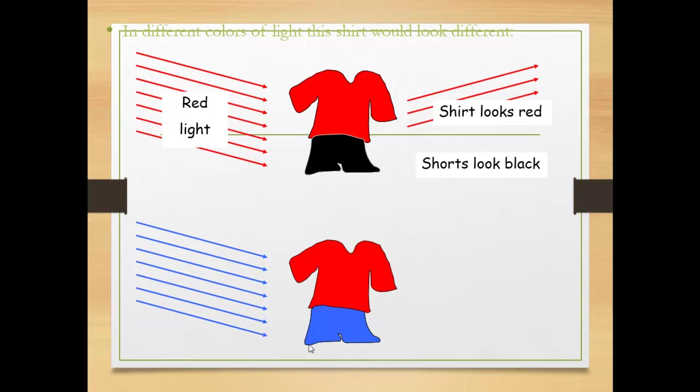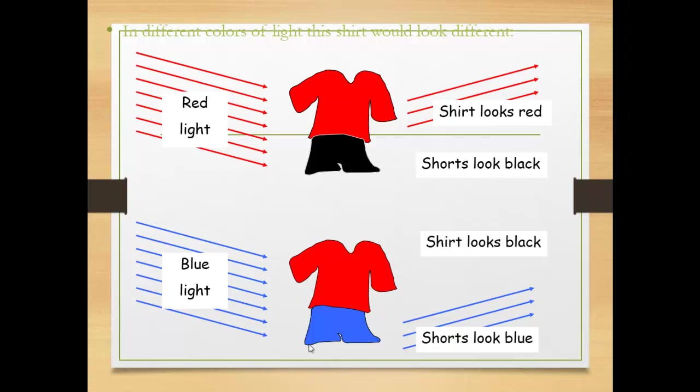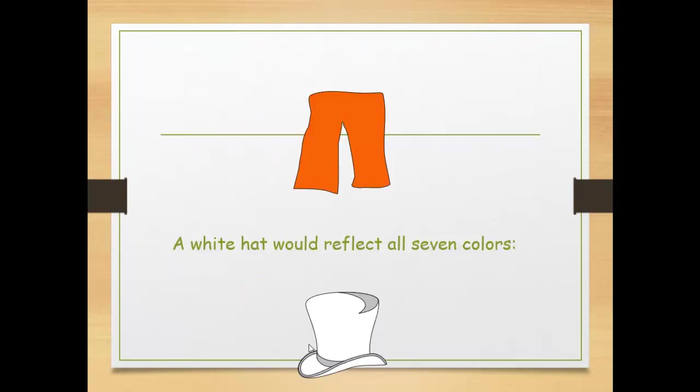But here, when the blue color falls on a red shirt, the red shirt reflects its own color only. So when another color falls on a different color, blue falls on red, it reflects blue for the shirt because it is the same color. But for the shirt, it seems black.